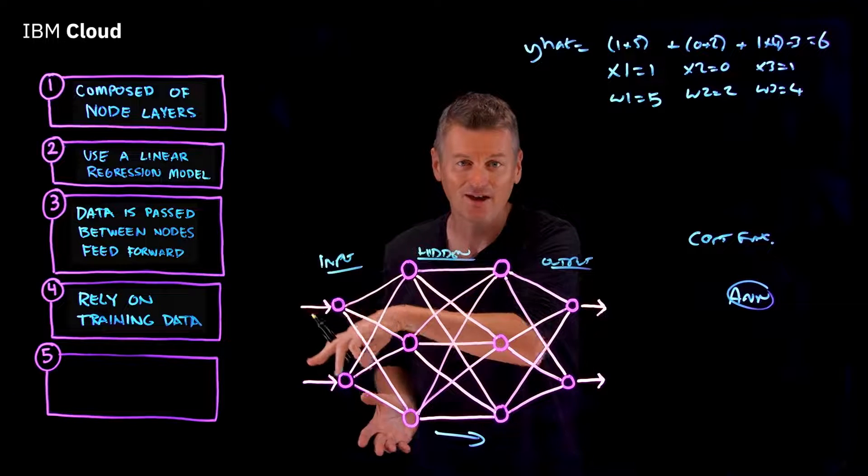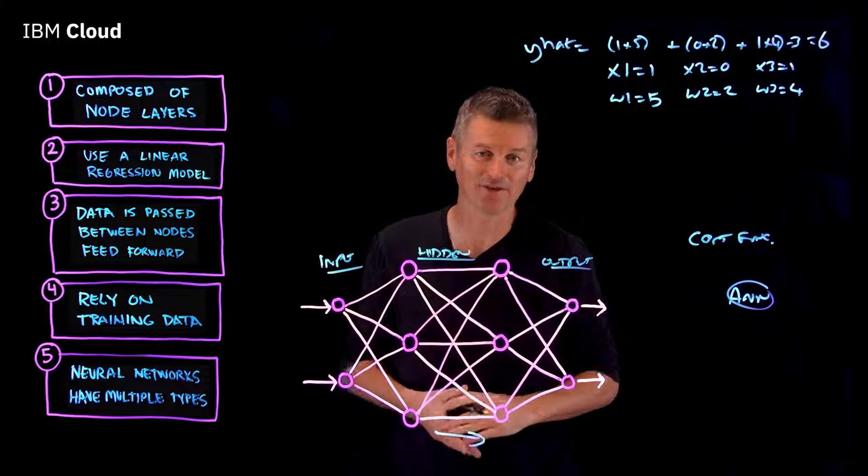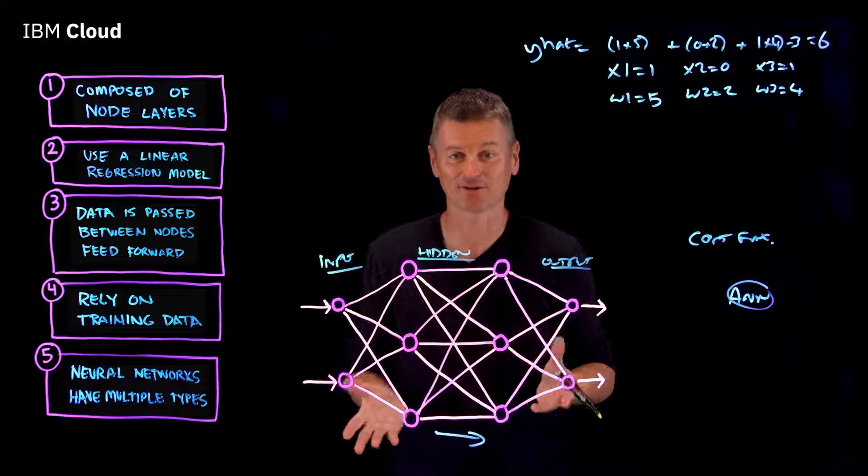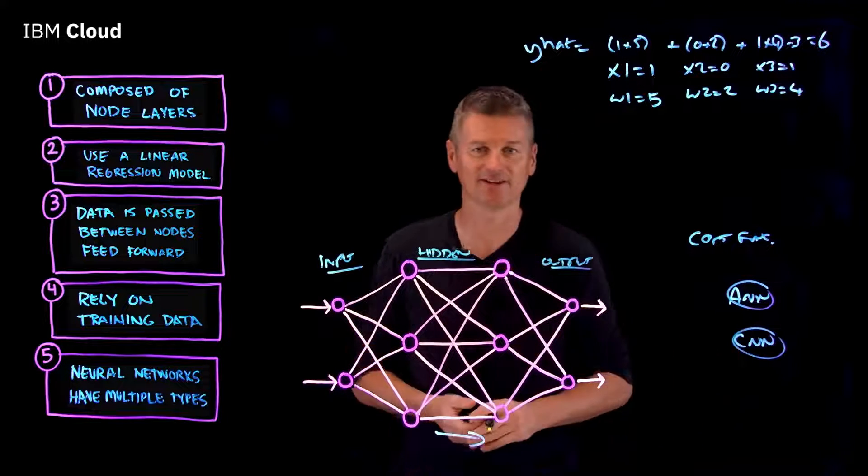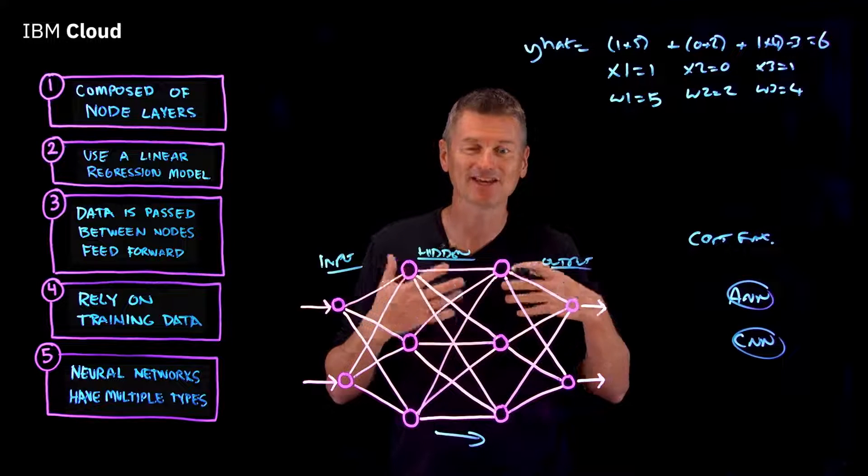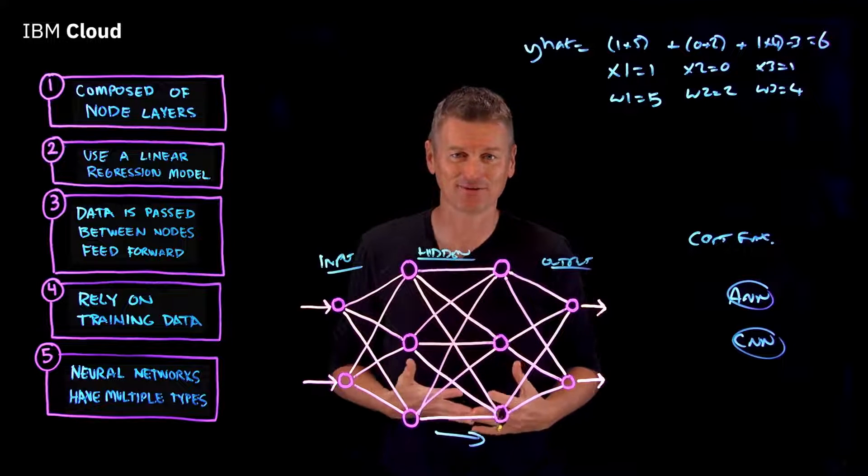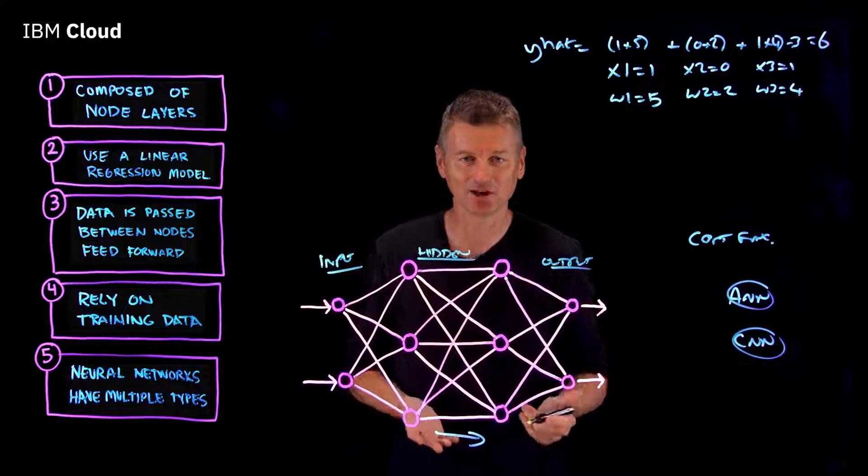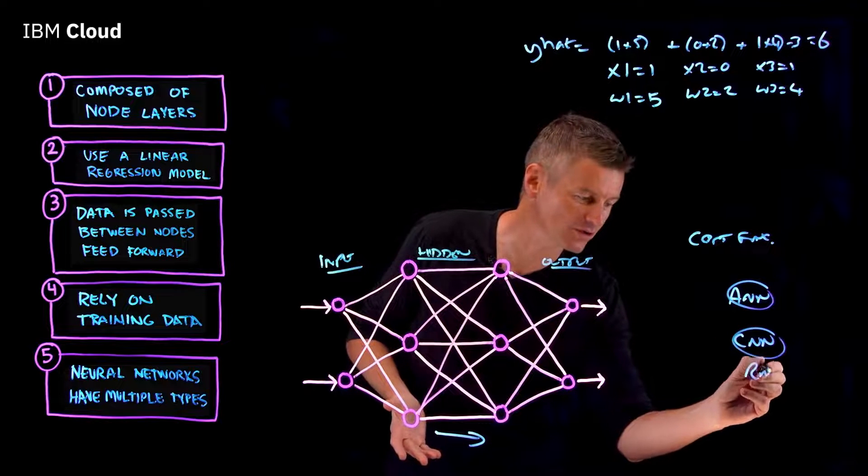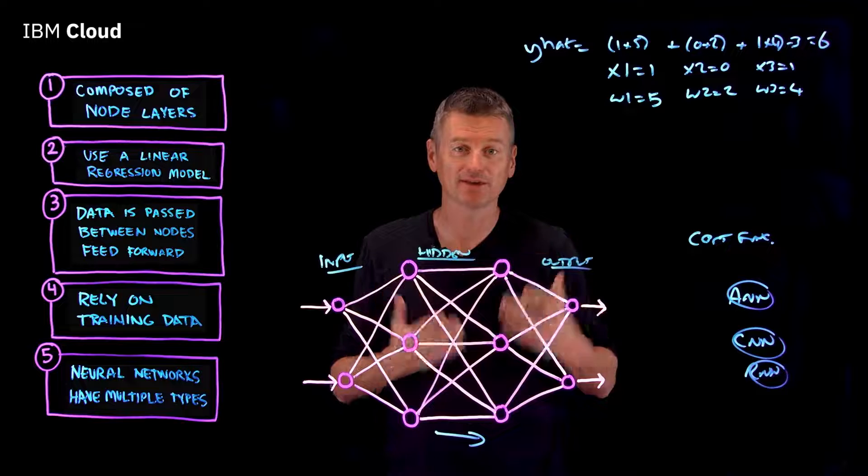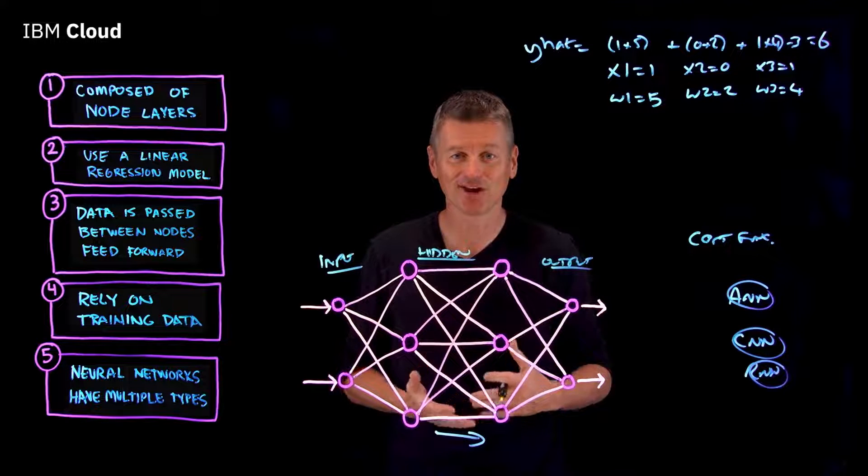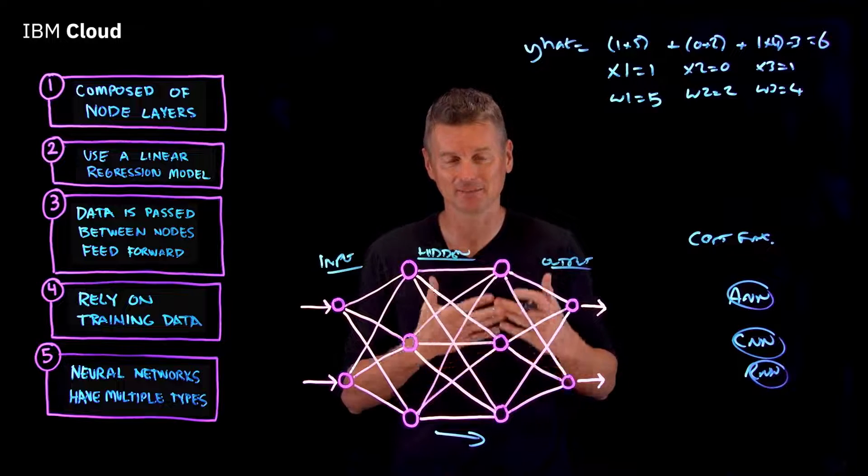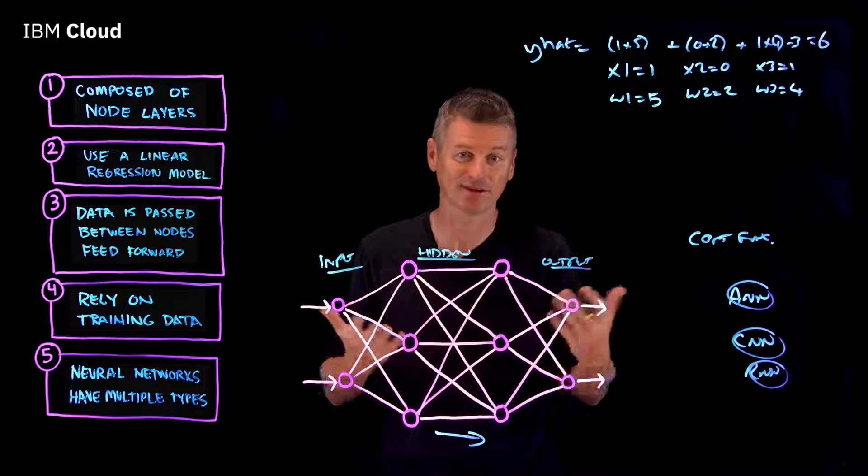And then, finally, number five, there are multiple types of neural networks beyond the feed-forward neural network we've described here. For example, there are convolutional neural networks, known as CNNs, which have a unique architecture well-suited for identifying patterns like image recognition. And there are recurrent neural networks, or RNNs, which are identified by their feedback loops. RNNs are primarily leveraged using time series data to make predictions about future events like sales forecasting.